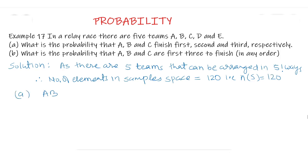Now, Part A: A, B, C have to be the first 3. That is, A is 1st, B is 2nd and C is 3rd in the order of finishing the relay race. So, this is only one arrangement: A, B, C. The remaining 2 teams can be arranged in 2! ways, finishing 4th and 5th.